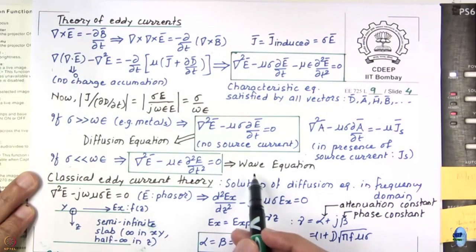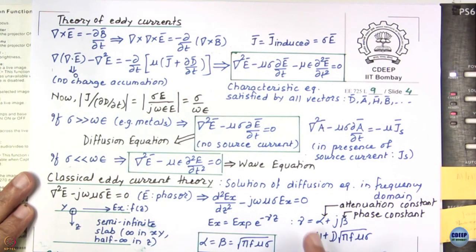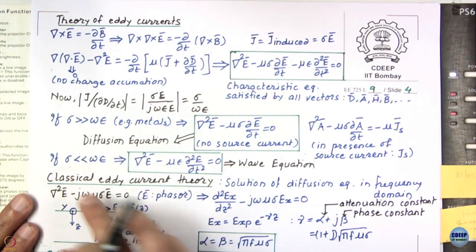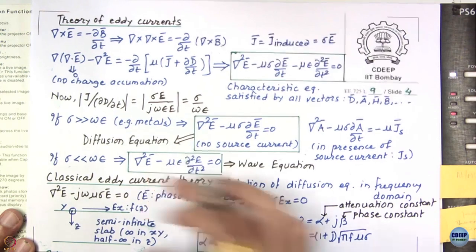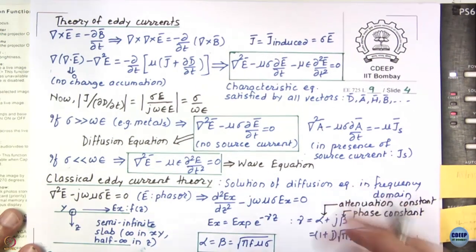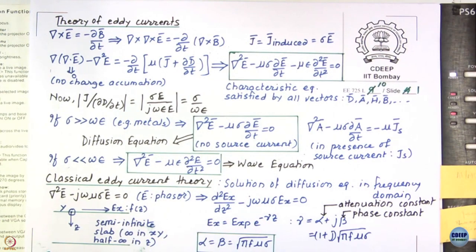Welcome to the 10th lecture of this course. We stopped at the wave equation in the previous lecture, so we will start with the classical eddy current theory. This will be the first slide of the 10th lecture. In classical eddy current theory, we basically solve the diffusion equation for a metallic plate excited by a surface field intensity which is time varying.